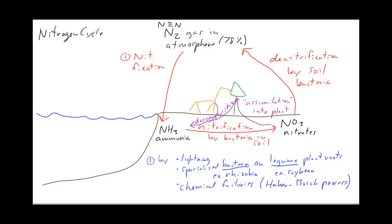This process that we just showed also occurs in the ocean. You have N2 gas which converts into ammonia through nitrogen fixation. And that can convert into nitrates. And nitrates can be converted back into nitrogen. So that's the basic nitrogen cycle. It occurs in both ocean ecosystems and terrestrial ecosystems too. There's aquatic microorganisms that can do these steps as well.